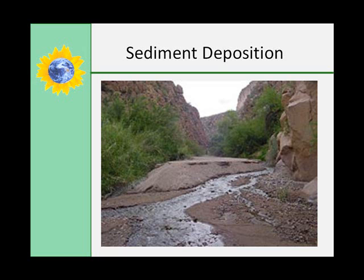One feature of sediment deposition is the creation of bars such as sandbars, and stream meanders in which the stream channel zigzags over relatively flat terrain. In a cross section of a stream, the water in the center of the channel flows more quickly than the water at the sides or bottom, because they are slowed down by frictional drag.